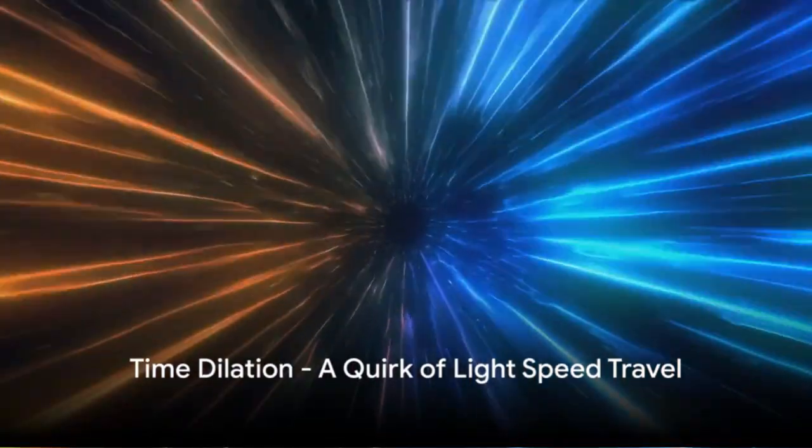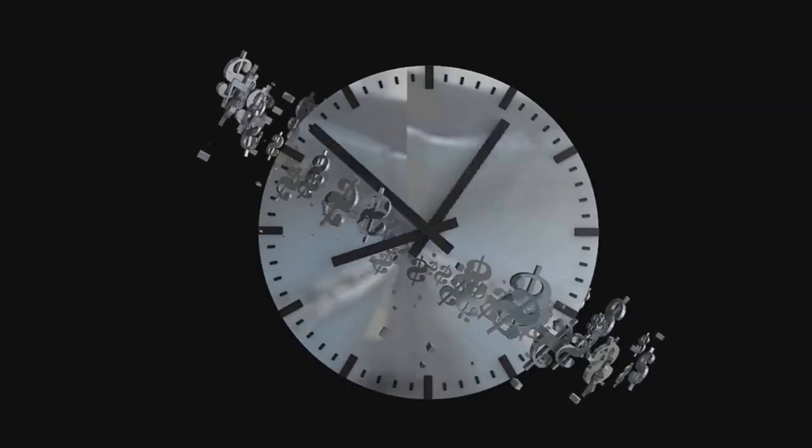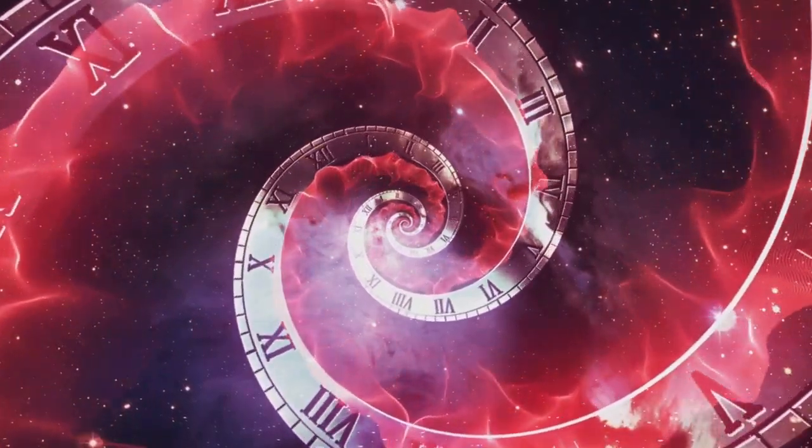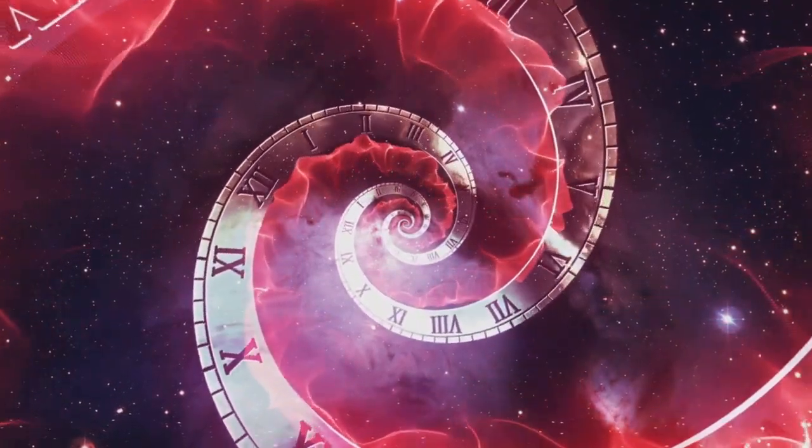But what if you could travel at the speed of light? How would that affect time? This intriguing question opens up a world of mind-bending physics, a realm where time itself can stretch and shrink. Welcome to the concept of time dilation. Time dilation is an intriguing phenomenon predicted by Einstein's theory of relativity. It's the idea that time doesn't tick at the same rate everywhere in the universe. Instead, time can speed up or slow down, depending on how fast you're moving or how strong the gravitational field around you is.